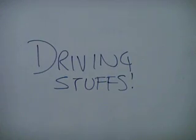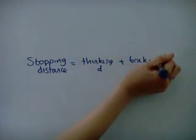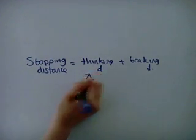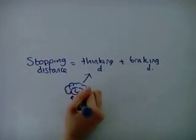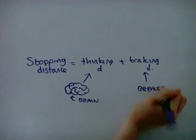Driving stuff. Stopping distance equals thinking distance plus braking distance. The thinking distance is the distance travelled while reacting, while the braking distance is the distance travelled after the brakes are applied.